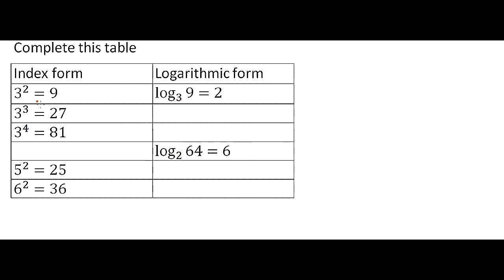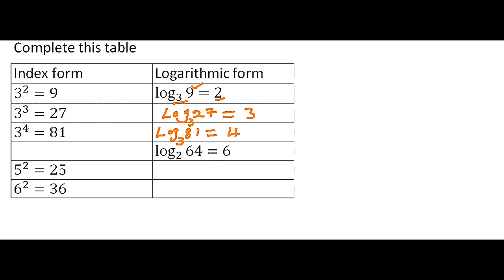For example, the first one: we are given index form 3 squared equals 9. The logarithmic form of this is log of 27 to base 3 equals 3, since 3 cubed equals 27. Next, 3 to power 4 equals 81, so we can write log of 81 to base 3 equals 4. Note here that the index is what we are calling the logarithm of the number.